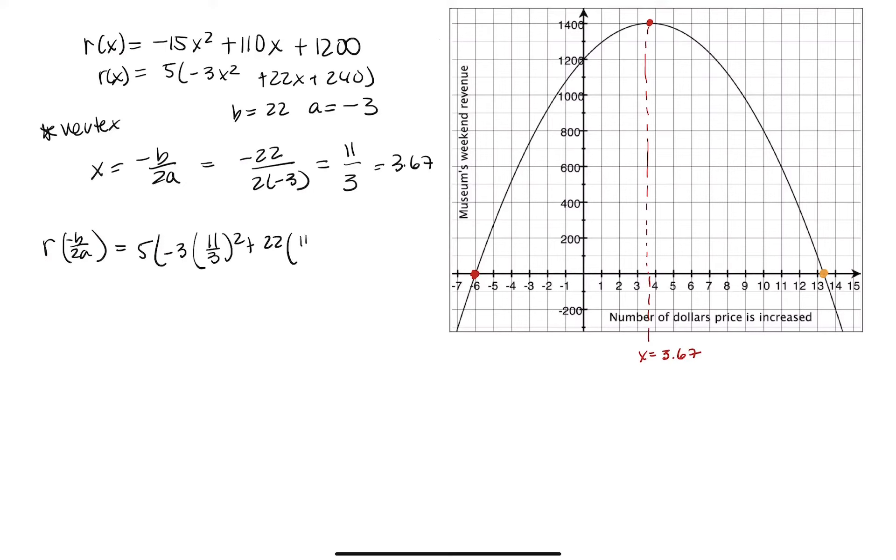And this works out to be negative 5 times negative 121 over 3 plus 242 over 3 plus 240. So negative 5 times 841 over 3, which is negative 4,205 divided by 3 or approximately 1,401.67.